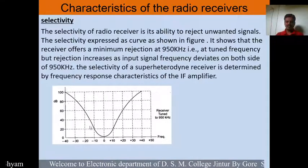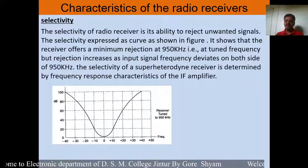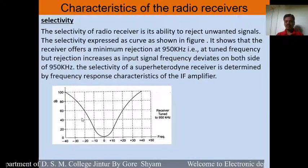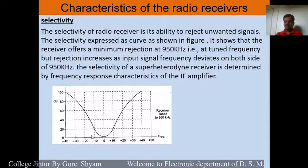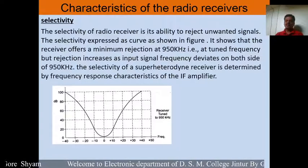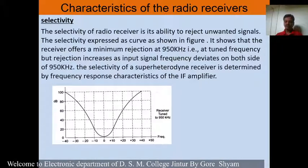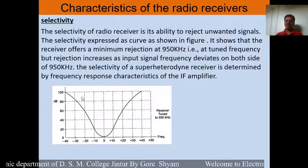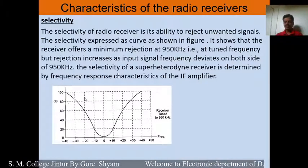This is the selectivity curve for the radio receiver. The receiver offers minimum rejection at 950 kHz — here the receiver is tuned at 950 kHz. When the frequency varies above or below 950 kHz, the rejection increases. The selectivity of a superheterodyne radio receiver is determined by the IF amplifier — it depends upon the performance of the intermediate frequency amplifier.